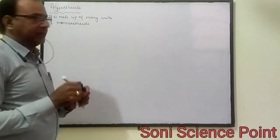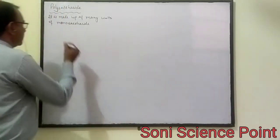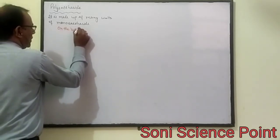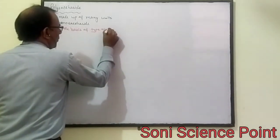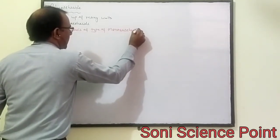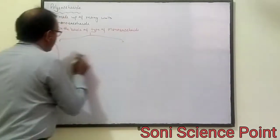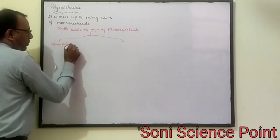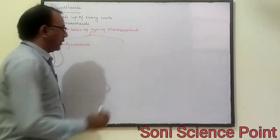We can categorize polysaccharide on different bases. The first one is on the basis of types of monosaccharide. On this basis, polysaccharide is of two types: the first one is homo polysaccharide, and the second one is hetero polysaccharide.